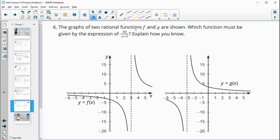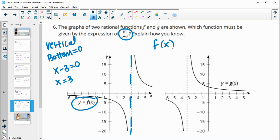Number six, the graphs of two rational functions, f and g, are shown. Which function must be given by this expression? So now when we look, we can see a dotted line for the vertical asymptote. So remember that vertical asymptotes is where the bottom equals zero because we can't have division by zero. So the bottom is x minus 3. So we'll figure out when that equals zero. So add 3 to both sides and you get a vertical asymptote at x equals positive 3, which is for the f function. So this is the function of f(x) because that is a vertical asymptote at 3.